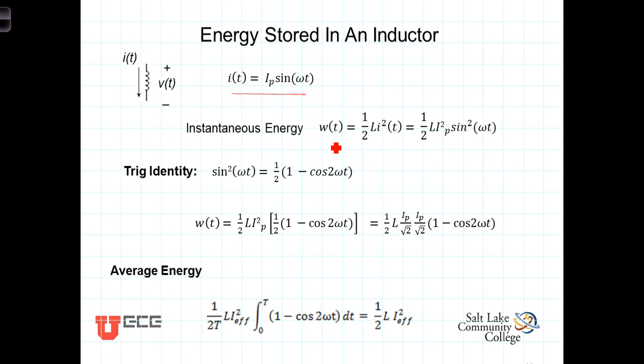We want to find the average energy. In order to do that, we need to integrate. It's easier to integrate the sine squared of omega t if we use this trigonometric substitution, or the trig identity here. Substituting this for the sine squared, we have then this.